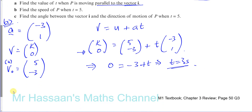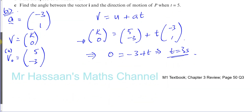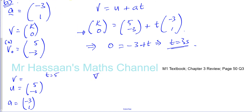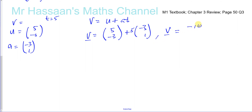Part b: find the speed of particle P when t equals 5 seconds. Using v = u + at again: u is (5, -3), a is (-3, 1), and t = 5. So v = (5, -3) + 5 × (-3, 1) = (5 - 15, -3 + 5) = (-10, 2). That's the velocity vector at t = 5 seconds.